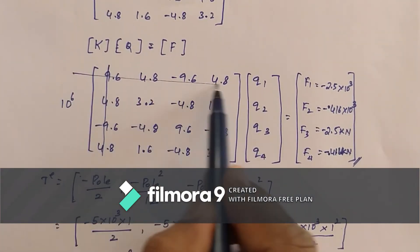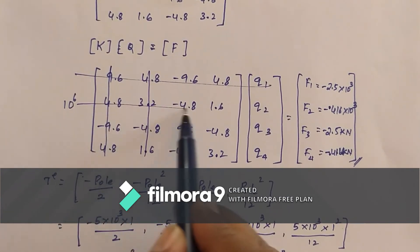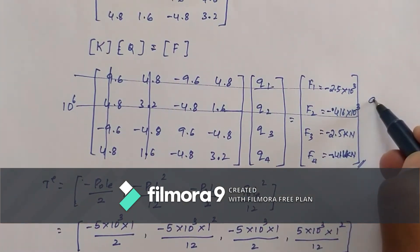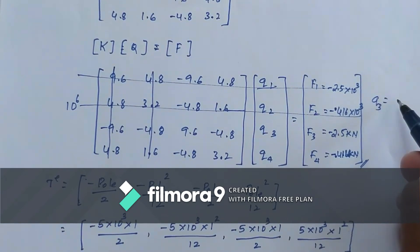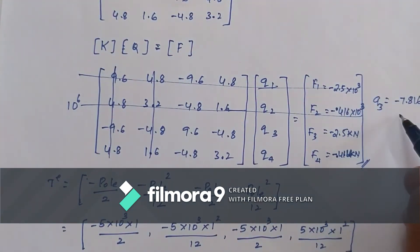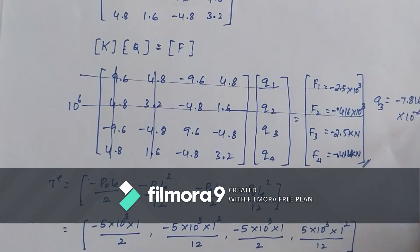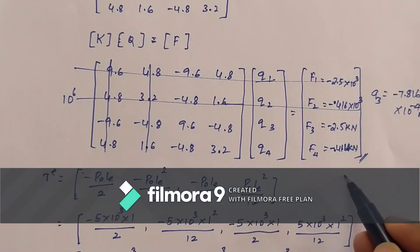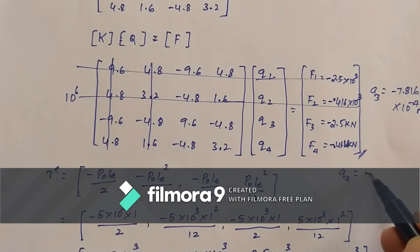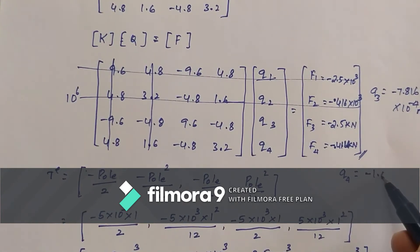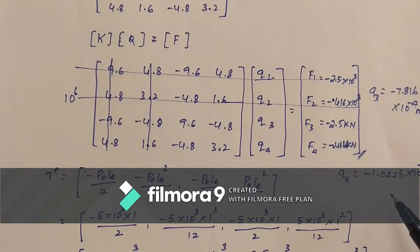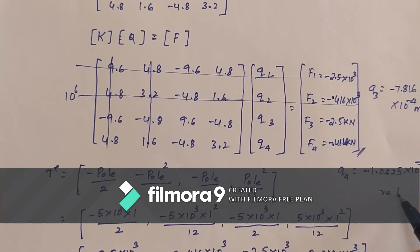Since node 1 is fixed, we delete the first row, first column, second row, and second column. Solving the reduced system gives: q3 = −7.816 × 10⁻⁴ meters, and q4 = −1.0425 × 10⁻³ radians.